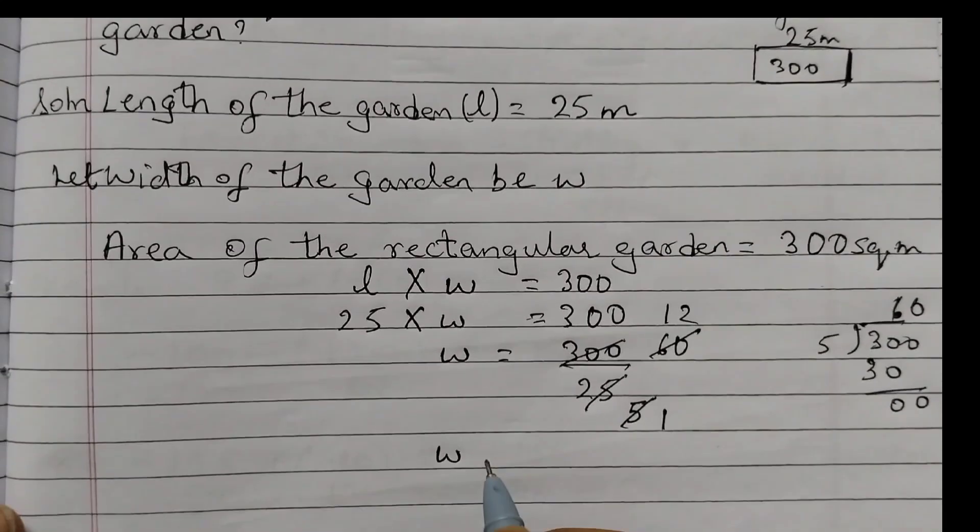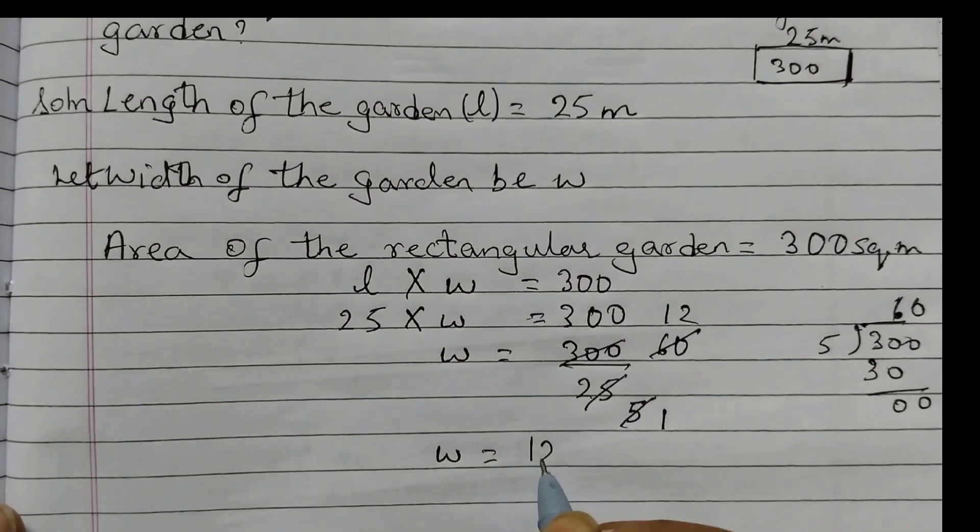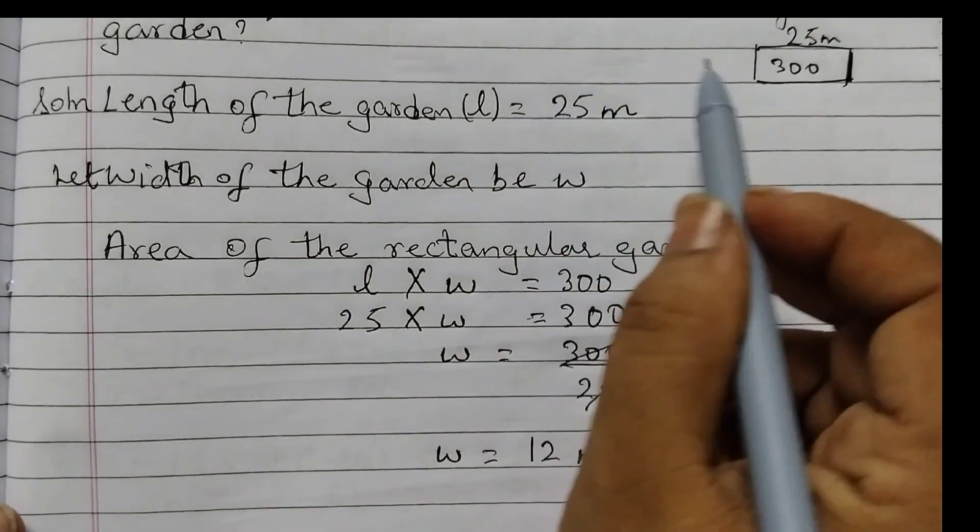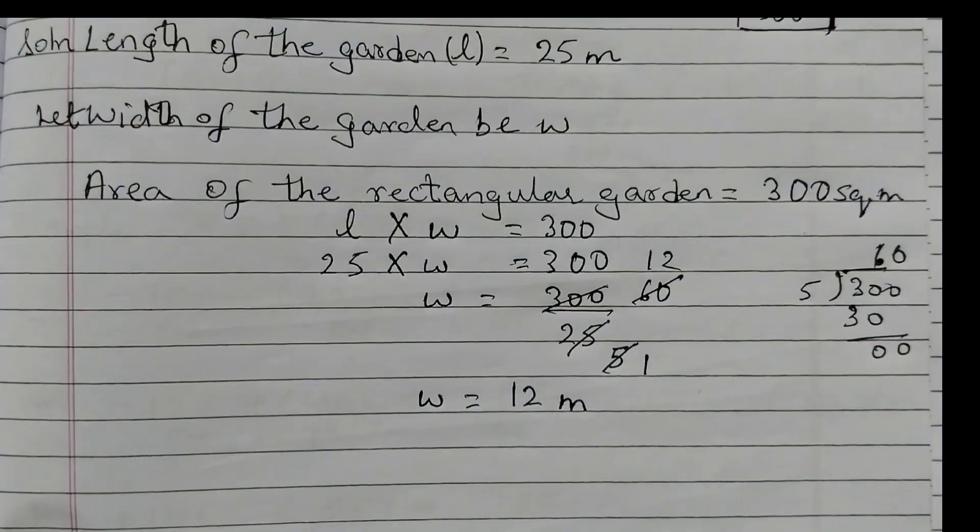What is the width of the garden? The width of the garden is 12 meters.